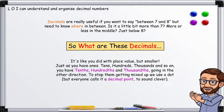Just as you have ones, tens, hundreds, thousands, and so on, you have tenths, hundredths, and thousandths — going in the other direction. To stop them getting mixed up, we use a dot, but everyone calls it a decimal point, to sound clever.